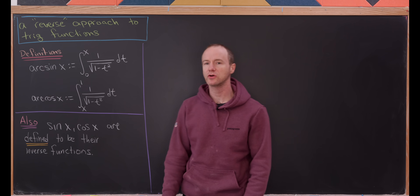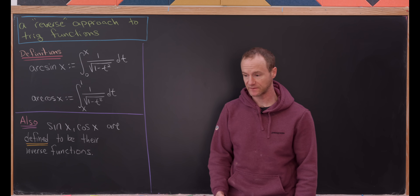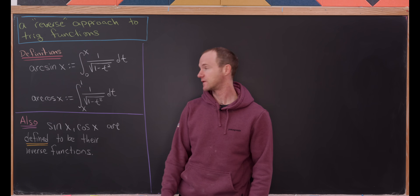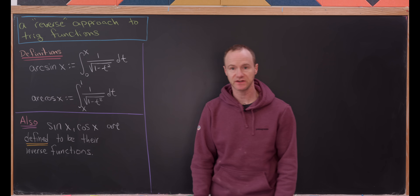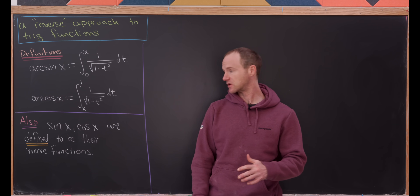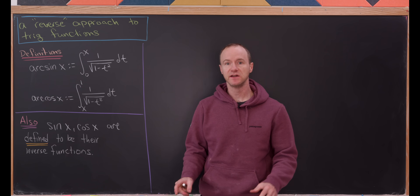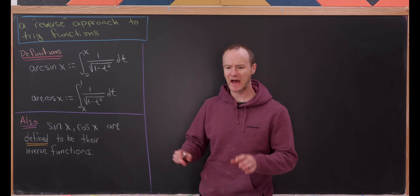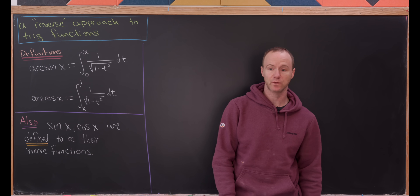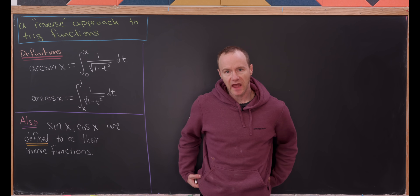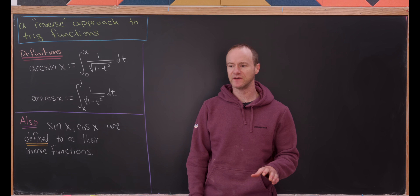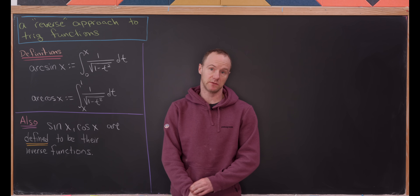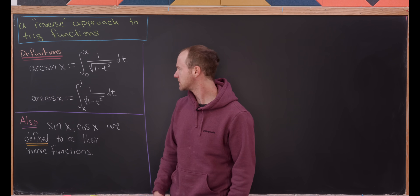Today I want to look at a pretty interesting approach to defining the trigonometric functions. First we'll define the inverse trigonometric functions via their integral representations, and then define the trig functions, sine and cosine, to be the inverses of these inverse functions. So this is kind of a backwards or reverse way of getting at the trig functions. And we'll see that the properties we expect for sine and cosine exist.